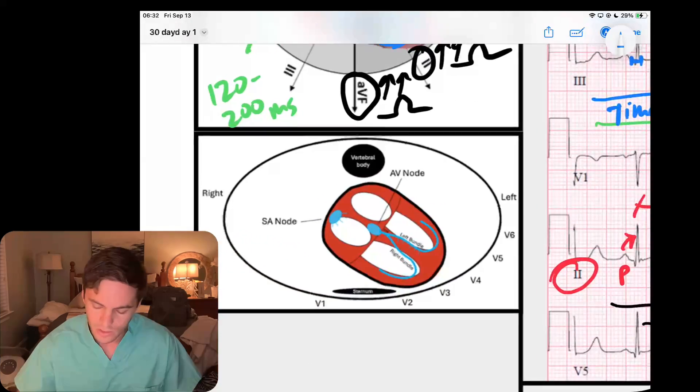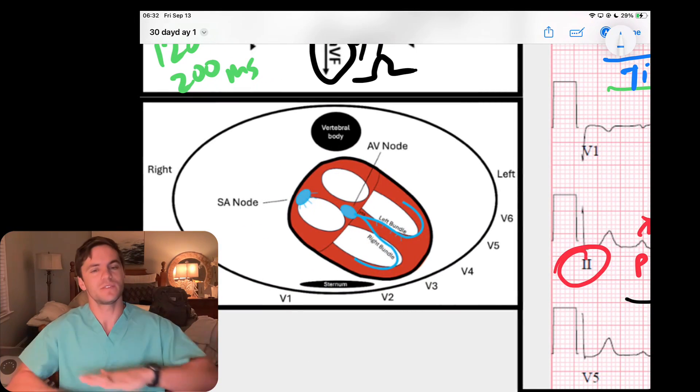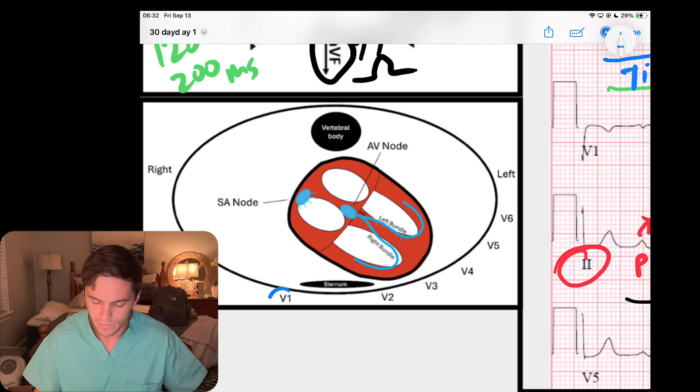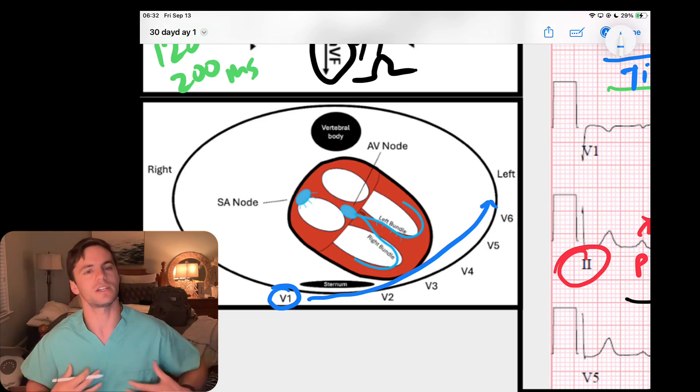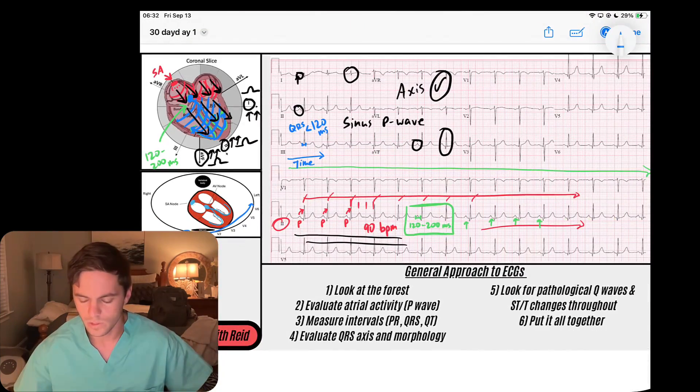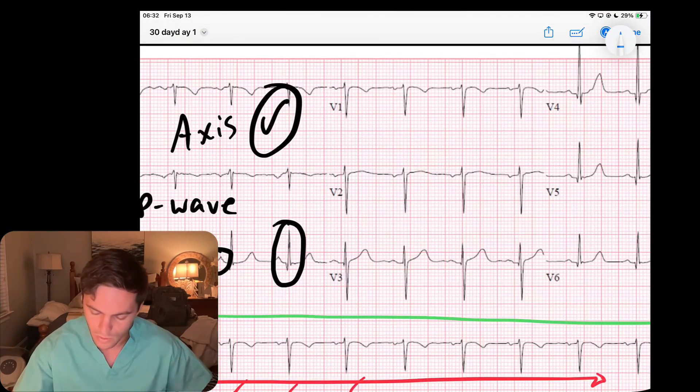Remember that the precordial leads are on a transverse plane—that means if I cut myself through and through right here, I have V1 right here on the right sternal border, and then we go all the way to V6 across the chest.